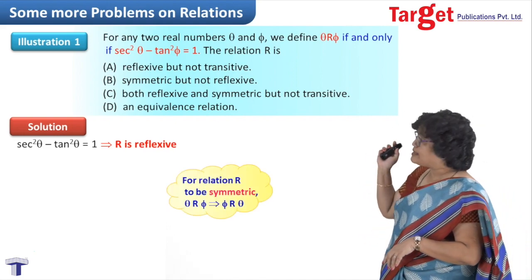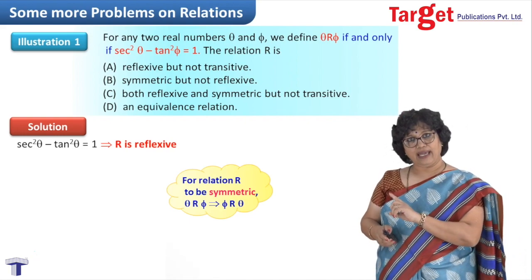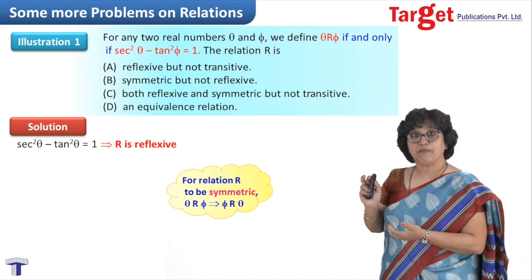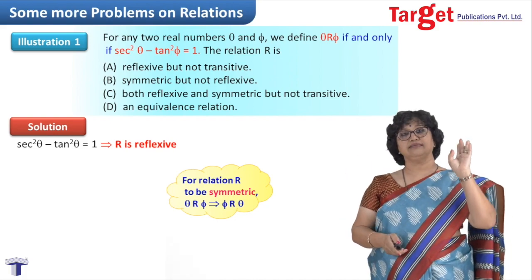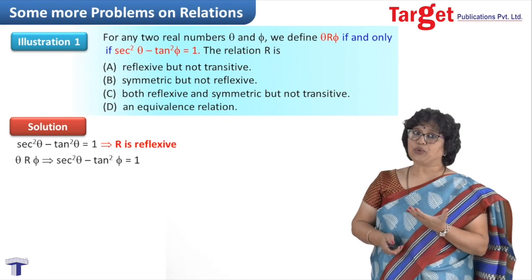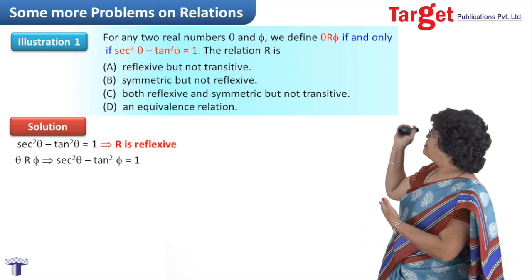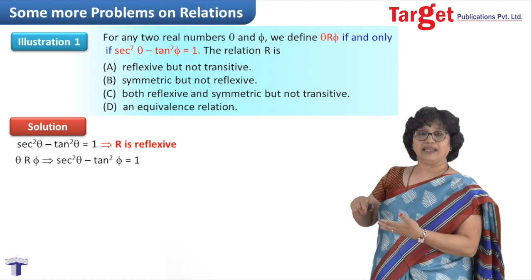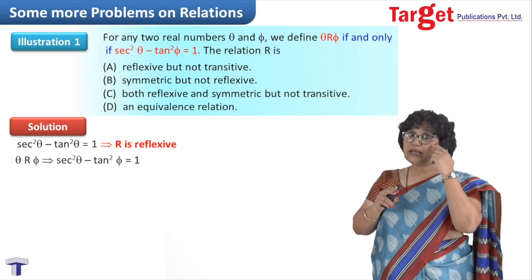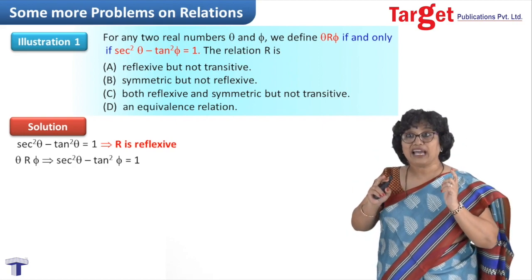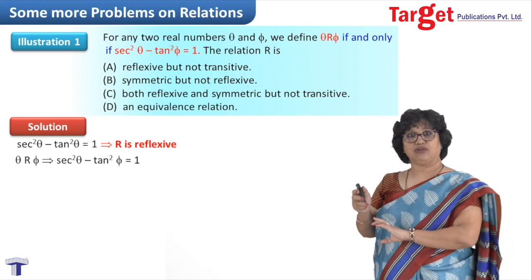To check if it is symmetric, we verify that if theta is related to phi, it implies phi is related to theta. We start with theta related to phi, meaning sec² theta minus tan² phi equals 1. We need to arrive at sec² phi minus tan² theta equals 1.